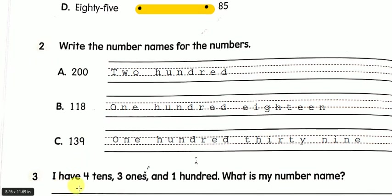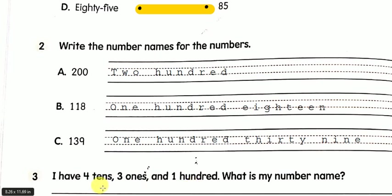Third one is: I have four tens, three ones, and one hundred. What is my number name? Tens, ones, and hundreds are given, and you have to write the number name. As I have told you before, begin with the number of hundreds followed by the next two digits — number of tens and number of ones. How many hundreds? One hundred. How many tens? Four tens — four tens makes forty. How many ones? Three ones. So forty-three — the last two digits is forty-three — one hundred forty-three.